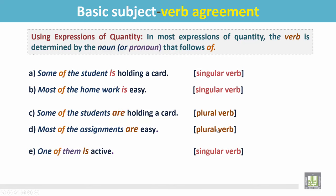Number E: 'One of them is active.' Here the sentence begins with 'one,' and even though the pronoun following is plural, due to 'one,' the verb should be singular: 'is.'